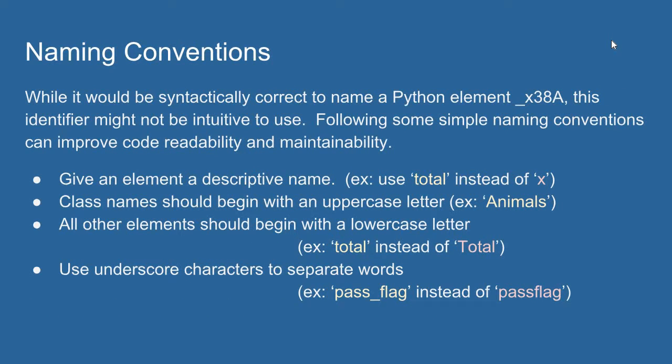Those were the rules to name identifiers. Let's talk about the conventions we should follow when we name things in Python. Just because I can name something underscore x38a, maybe this isn't the best name I could choose. What we want to do is choose names for elements that help with the readability of our code and help with maintenance.